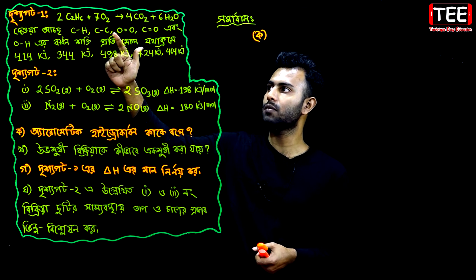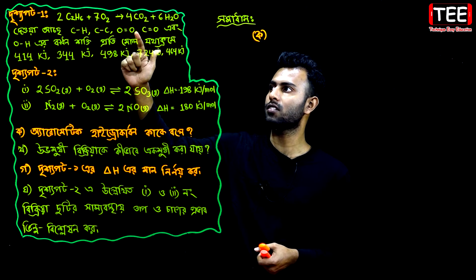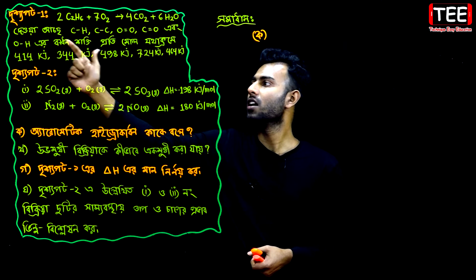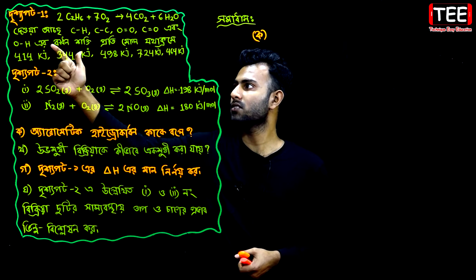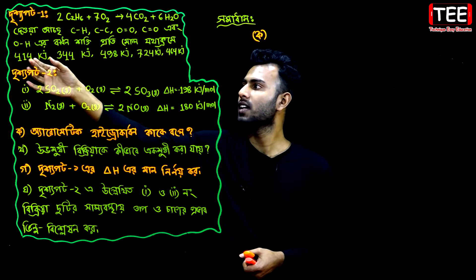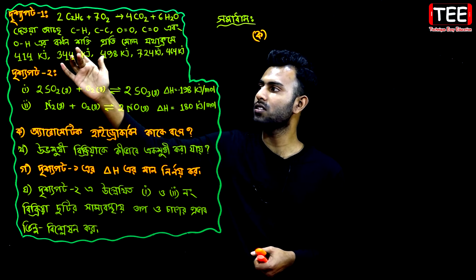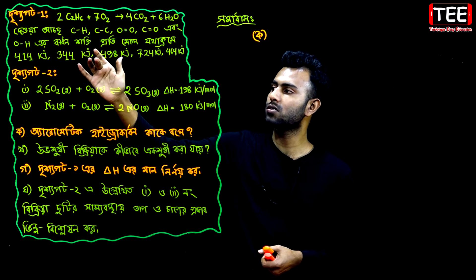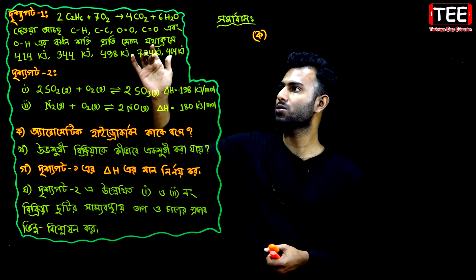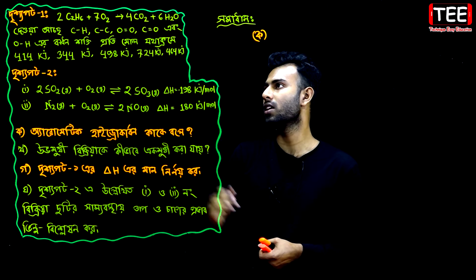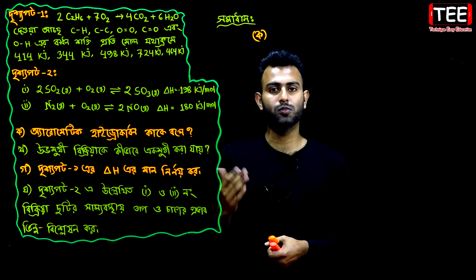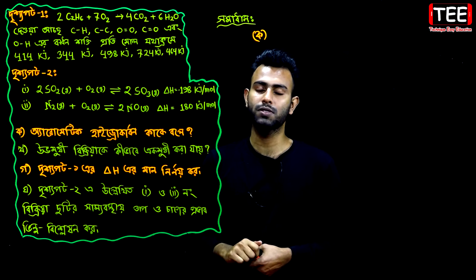The bond energy values are: 314 kJ/mol, 324 kJ/mol, and 929 kJ/mol. You can see these values - 603 people... these represent the bond energies we will be working with in our calculations.